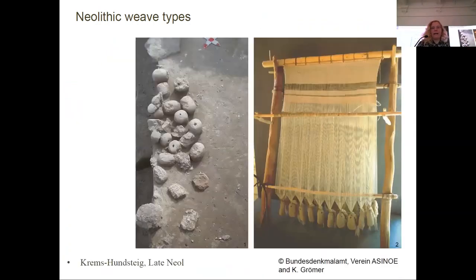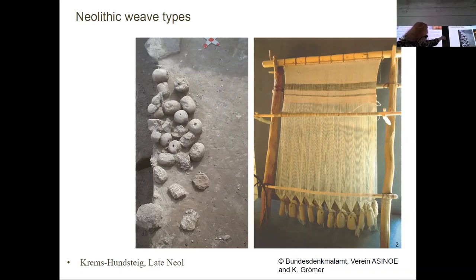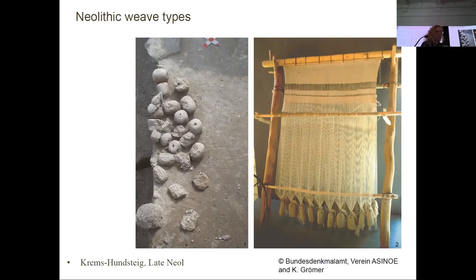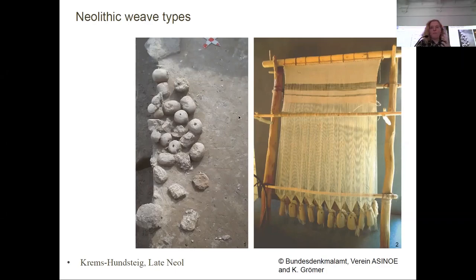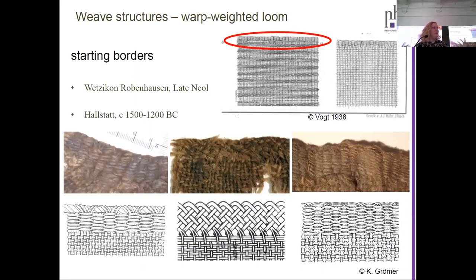Of course, we also have evidence for warp weighted looms — that means bigger machines to make actual textiles. I think it was Franz who excavated this loom from Kremsrundsteig. It's one of the earliest really in-situ layers of loom weights where we can see the standing posts and the loom weights in between — really solid evidence for such a loom. What we also have is indirect evidence for weaving on a warp weighted loom: the starting borders, because you integrally need them to weave. We have them from Neolithic sites as well as from Bronze Age sites.